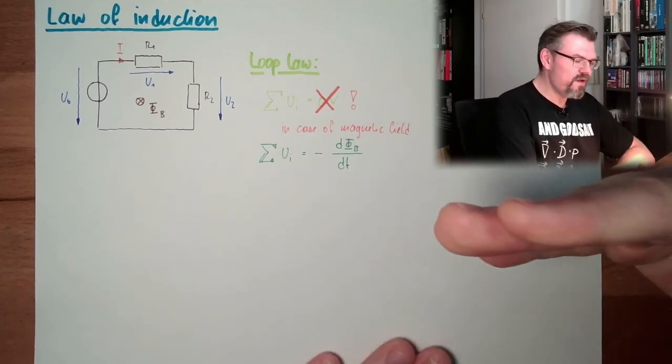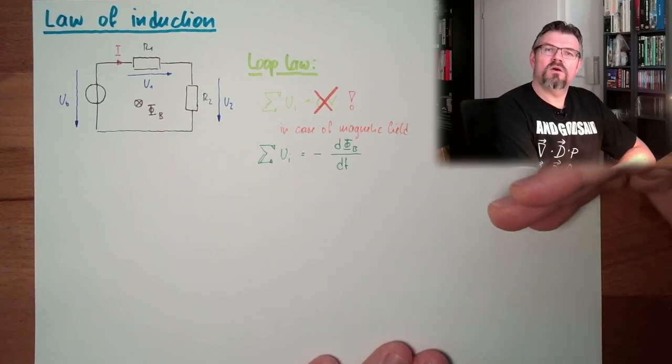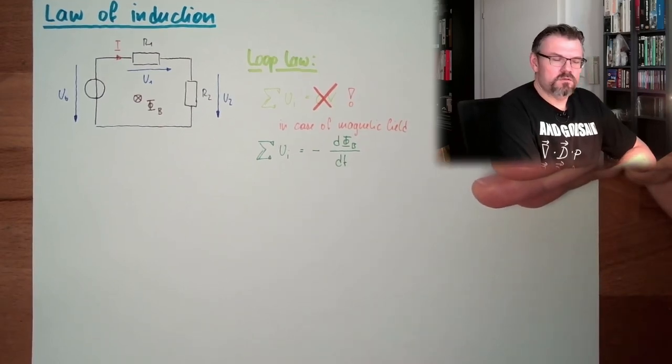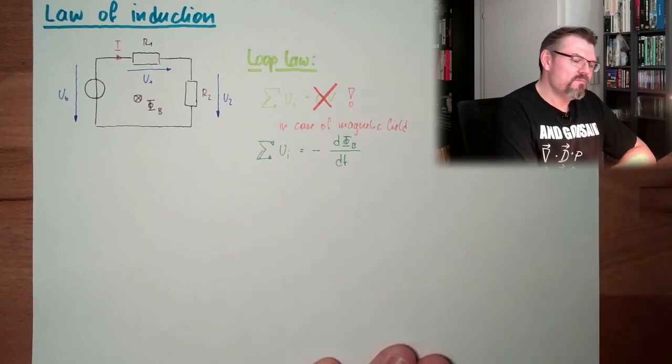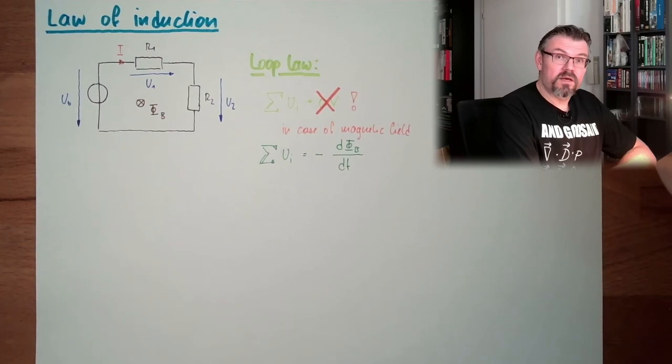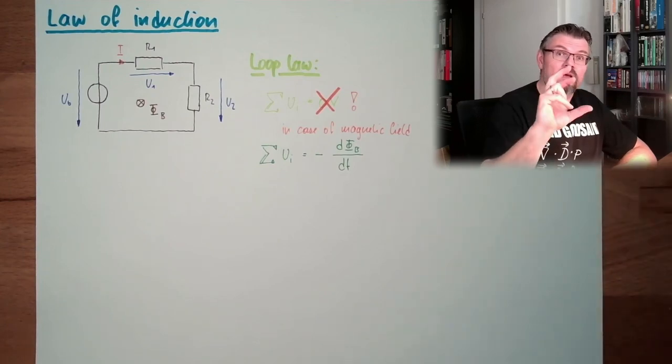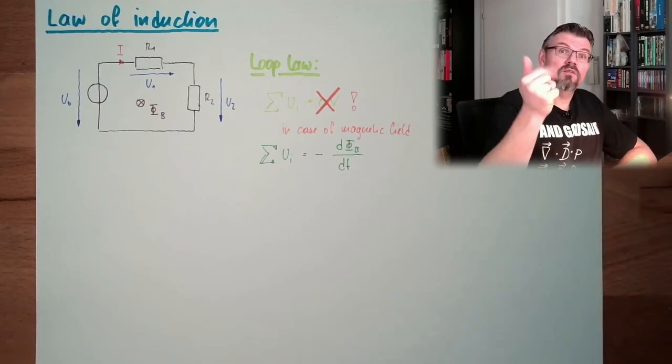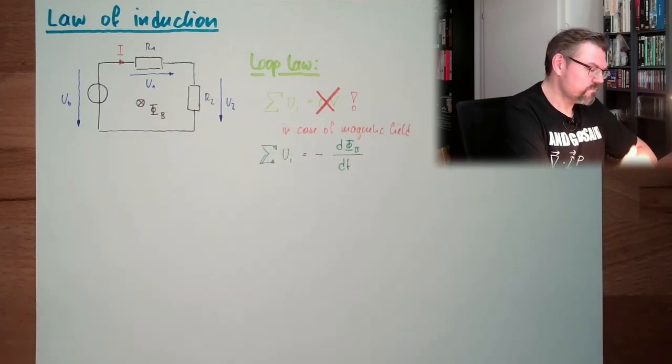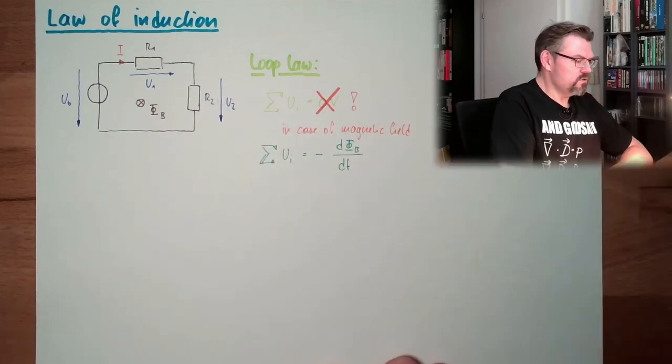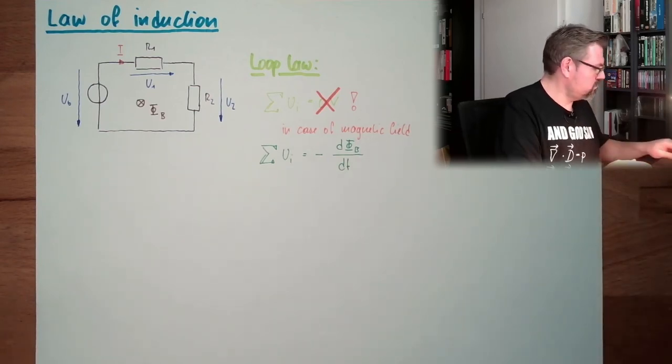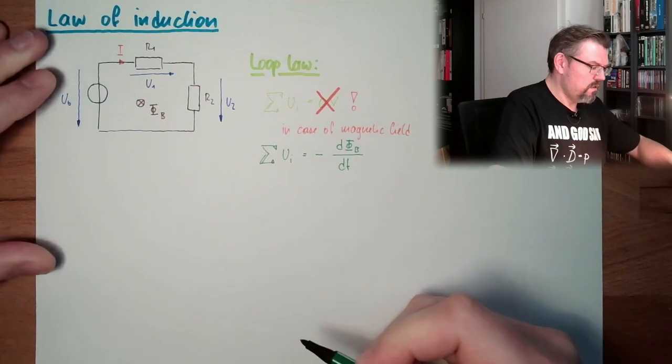So once we have a change rate of a magnetic flux, we do not have zero voltage, we have additional voltage. Like I said, mind the minus. Right-hand screw is very important in this matter, that we know in which direction the additional voltage is summing up. This is the law of induction. Write this in. Law of induction.